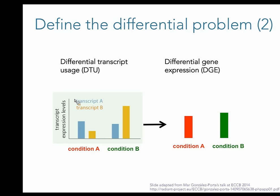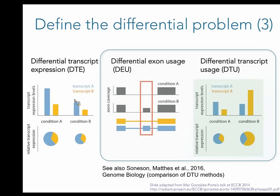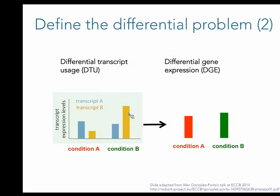The point is there are a lot of different ways to ask the question, and once you know what the question is, there are a lot of different statistical methods to answer it. For differential transcript usage, one fairly good approach is actually to project everything into exons and look at exon differences. Charlotte also just finished a study comparing different methods for differential transcript usage, and it turns out that exon counting works quite well in that situation.